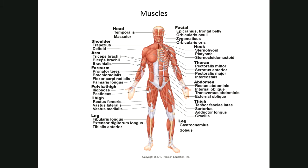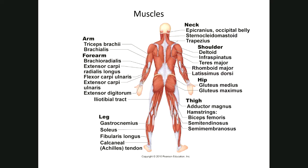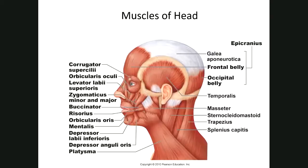On the posterior part, we're just looking at the big groups: your trapezius, your triceps brachii, your latissimus dorsi which is your back, your gluteal muscles, the hamstring group, and then your calf which is going to be your gastrocnemius and soleus.